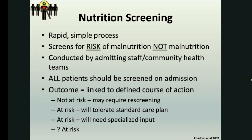The outcome of nutrition screening gives us a defined course of action. There are basically four categories of patients. The first is the patient that's not at risk — that patient may require re-screening because it might change through the ICU or hospital stay. For example, a patient admitted for elective surgery in a good nutritional state may not be at risk on admission, but if surgery complicates or the patient develops an ileus or a leak, it might change in a week's time. Then we get the patient at risk who will probably be okay with a standard care plan. Then the patient at risk who will need specialized input. And then the ones where there's a question mark about whether the patient is at risk. It's really the last two categories where the dietitian gets involved.